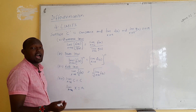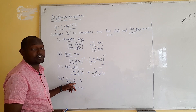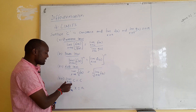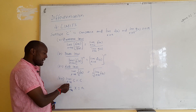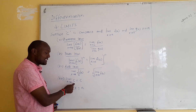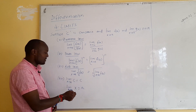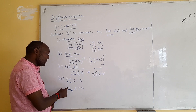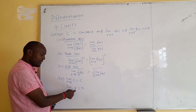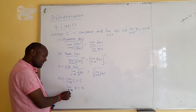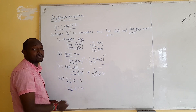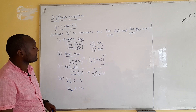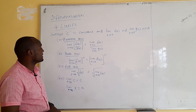We were also able to show when looking at differentiation using the first principle that the limit as x approaches a of a constant remains that constant. We had that when h approaches zero, the limit of a constant like 2 gives 2. Also, the limit as x approaches a of x equals a, because you simply replace x with a.